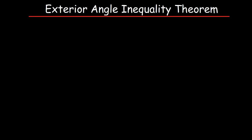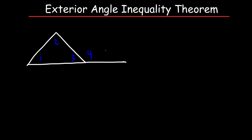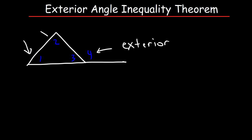In this video we're going to talk about the exterior angle inequality theorem. The main idea behind it is that the exterior angle is greater than any one of the remote interior angles. Let's draw a picture with angles 1, 2, 3, and 4. Angle 4 is the exterior angle — it's outside of the triangle. Angles 1, 2, and 3 are interior angles because they exist inside the triangle, but 1 and 2 specifically are known as remote interior angles.